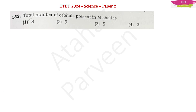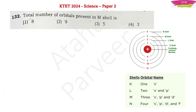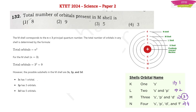Next question — this is a somewhat controversial one for me because it is a very easy question and in urgency I got confused between orbitals and subshells. The question is: the total number of orbitals present in M shell is? In K shell we have the S orbital, in L shell we have S and P, in M shell we have S, P, and D, and in N shell we have S, P, D, and F. The total number of orbitals: in 3S there is 1, in 3P there are 3, and in 3D there are 5 — total 9 orbitals in M shell.